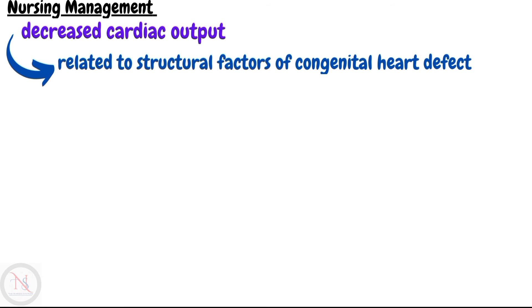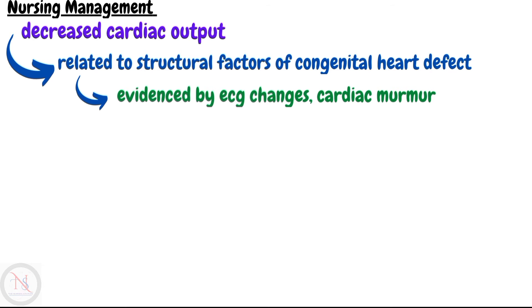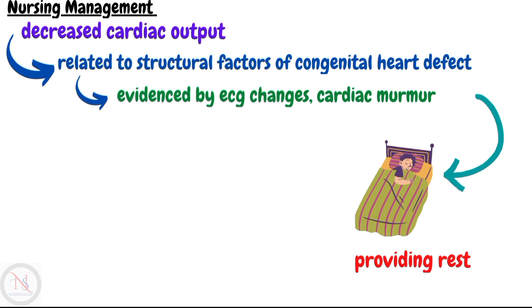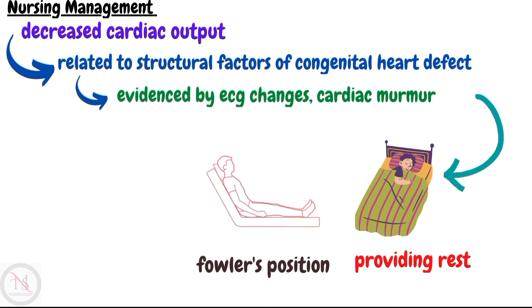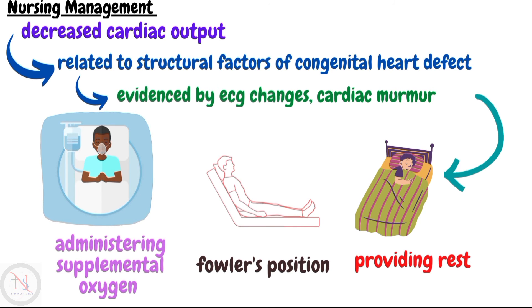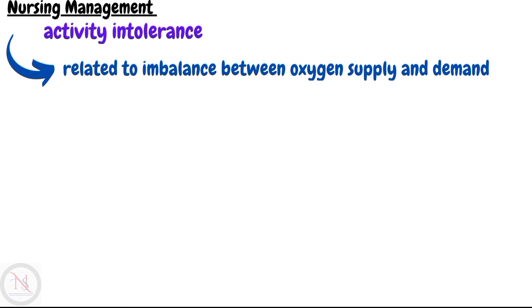Now we will discuss the nursing management of aortic stenosis. The first nursing diagnosis is decreased cardiac output related to structural factors of the congenital heart defect, evidenced by ECG changes and a cardiac murmur. Interventions include providing adequate rest periods to decrease myocardial workload and oxygen demand, positioning the child in the Fowler's position, and administering oxygen therapy if needed.